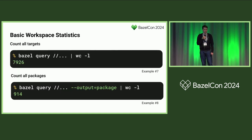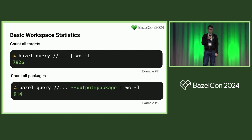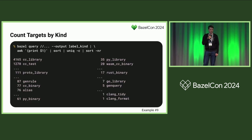Bazel Query does not have super capabilities like SQL for analyzing data, so you often need to post-process its results with shell or other tooling. Here I'm using Bazel Query to get simple statistics to understand how a repo looks. I query for all targets and count the lines, or query for all packages with output format package. With output label_kind and some shell magic, we can see how many targets of each kind exist — this Envoy repo is mostly C++, but also has protobuf, Python, and even some Rust.